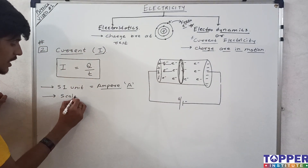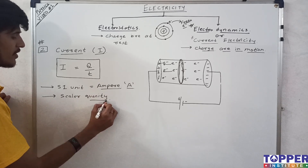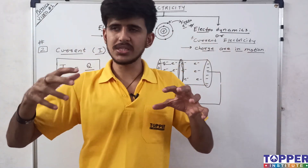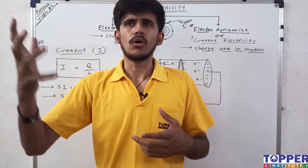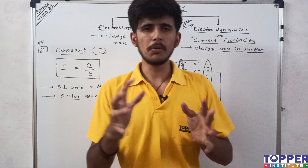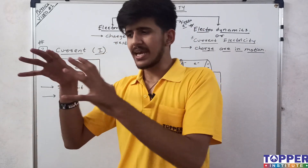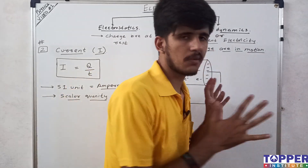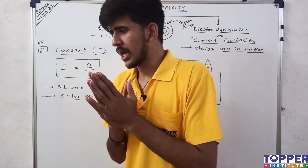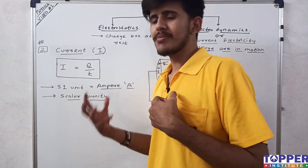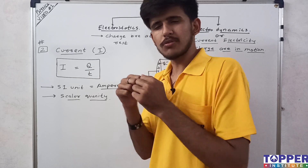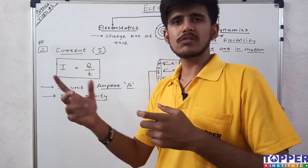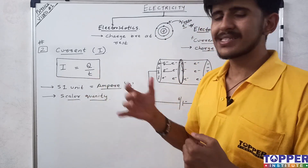An important point: current is a scalar quantity. Scalar quantities only tell us magnitude, while vector quantities tell us both magnitude and direction. For example, if I say 'I walked 5 km', that's only magnitude — that is distance, a scalar. If I say 'I walked 5 km in this direction', that gives both magnitude and direction — that is displacement, a vector. So remember: current is a scalar quantity — it only gives magnitude.